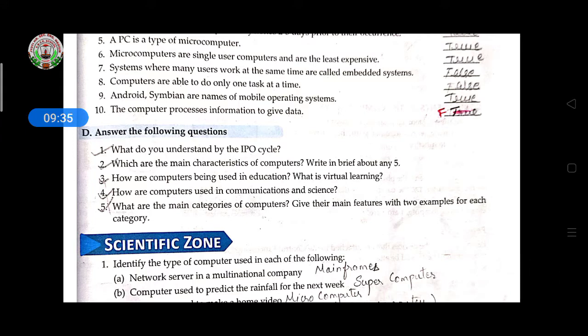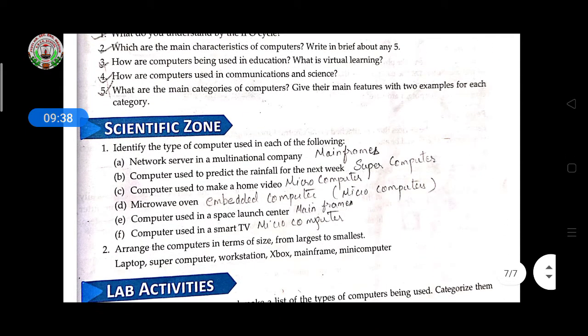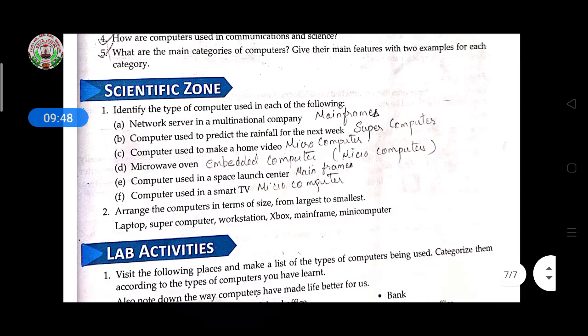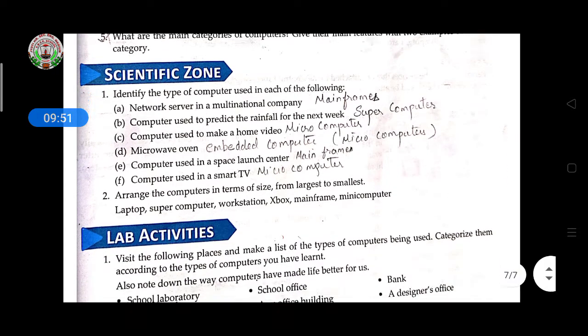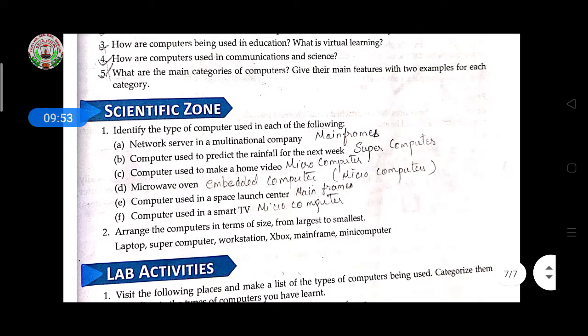Then scientific zone. In my book it is written scientific zone, in some student books it is written HOTS, so don't be confused. The answer is given here in this, but the next chapter, that HOTS question or scientific zone question answer is not written there, so you have to find out the answer and write. This question only you have to write in your practical notebook.